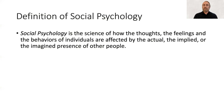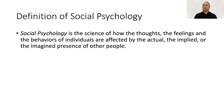I'd like to begin by giving a general definition of the field of social psychology. This is the science of how the thoughts, the feelings, and the behaviors of individuals are affected by the actual, the implied, or the imagined presence of other people. In other words, we're simply interested in how you are influenced by others, as well as what things you may be doing that affect those around you.